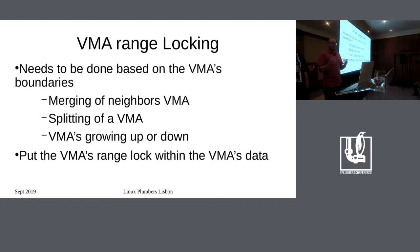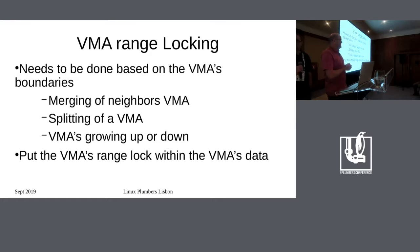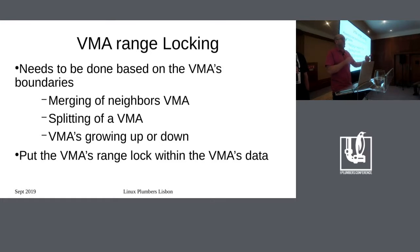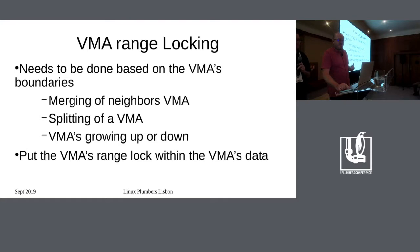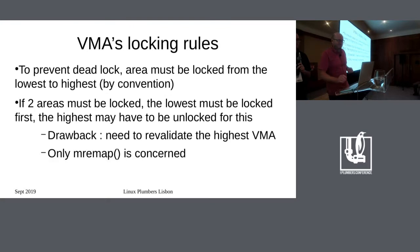There's always a trade-off, and today it's difficult to say one option is better than the other. Putting the lock inside the VMA makes sense because we need to lock the entire VMA range to prevent it from being split or merged while we're accessing it. Locking on the VMA boundaries seems to be the appropriate lock granularity, and using a lock inside the VMA makes this easier since we know the boundaries at that time.